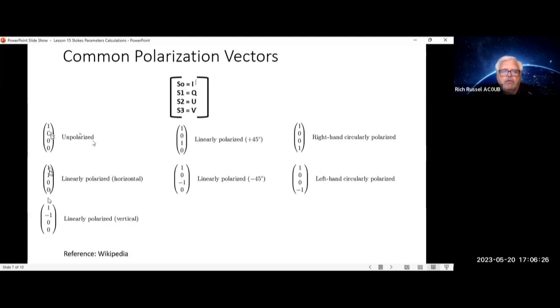And if you want to go to 45 degrees, 1, 0, 1, 0. And minus 45 degrees, 1, 0, minus 1, and 0. For right-hand circular polarization, it would be 1, 0, 0, 1. Left-hand circular polarization, 1, 0, 0, minus 1.